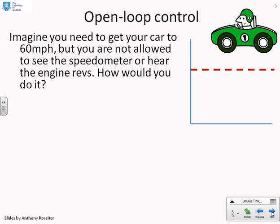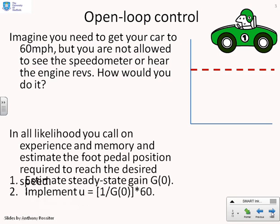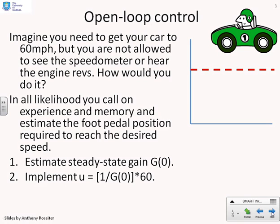Let's start by looking at open loop control. Imagine you need to get your car to 60 miles an hour. You're on a nice free straight road but you're not allowed to look at the speedometer or hear the engine revs. How would you get the car to the required speed? In all likelihood you'd have to call on experience and memory and estimate — that's the key word — the foot pedal position required to reach the desired speed.